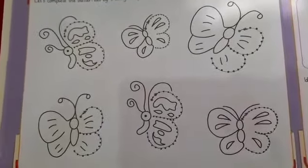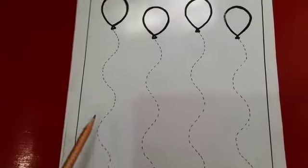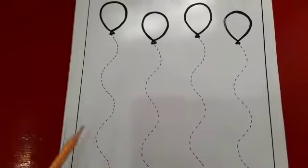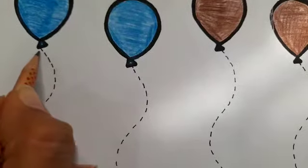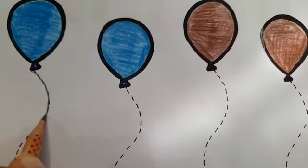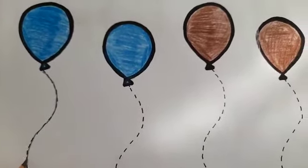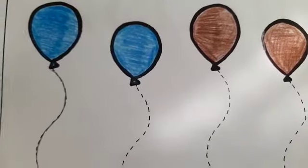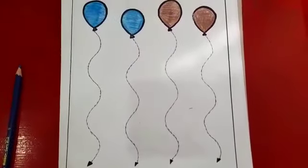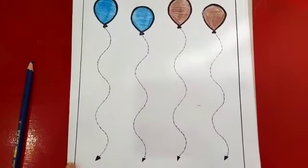Now, open your booklets. Trace and color. Students, you will color the balloons and also trace the waves. Okay, students, I have colored the balloons and completed the waves. You will be doing it in the same way.